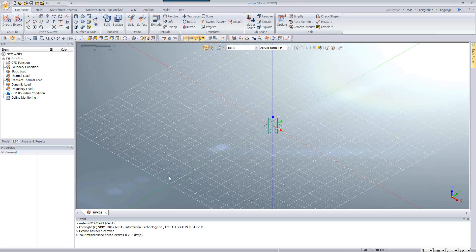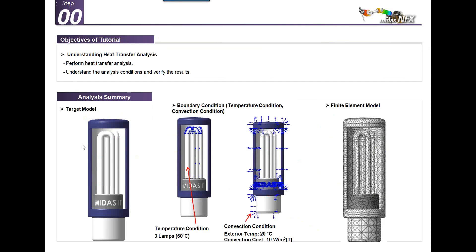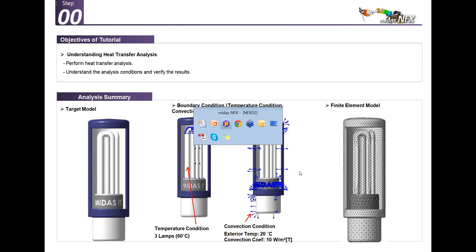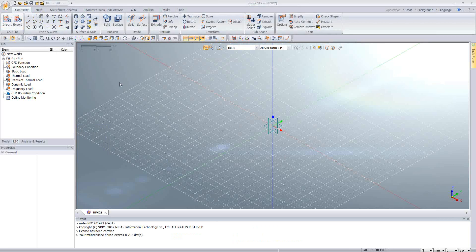This is the boundary condition I want to assign to my lamp model. I want to assign a fixed temperature of 60°C to the three glasses of the lamp, and on the other parts there will be a convection condition with 20°C and 10 W/m as the convection coefficient. Let's do it. The first thing is to import my model.